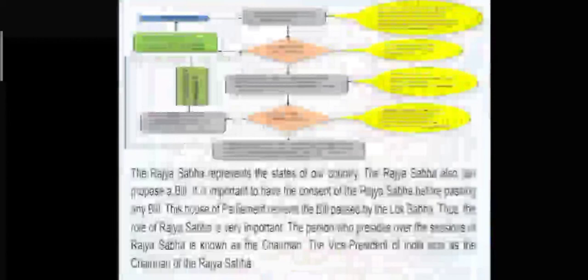The Rajya Sabha represents the states of our country. It can also propose a bill, and it is important to have the consent of the Rajya Sabha before passing any bill. This house reviews bills passed by the Lok Sabha, making its role very important. The person who presides over the sessions of Rajya Sabha is known as the Chairman — the Vice President of India acts as the Chairman. Any bill proposed in the Lok Sabha comes to the Rajya Sabha for consent and reviewing, and only when it gets that consent does it go to the President. The Rajya Sabha can also suggest amendments, that is changes, in the bills.